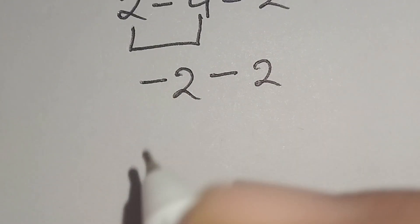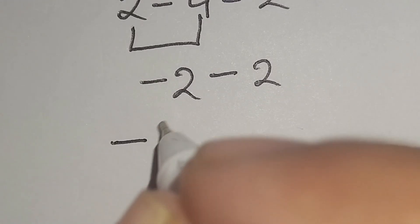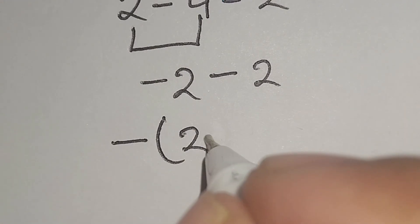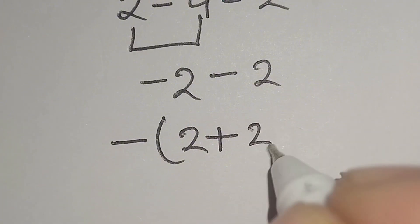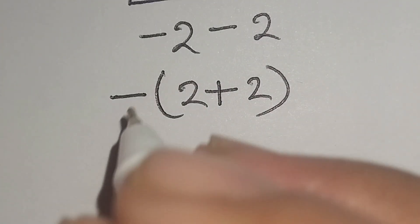take common minus sign from here. Here, minus bracket, this 2, this minus becomes plus, these 2.